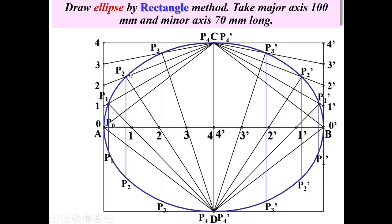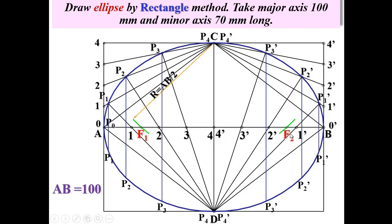Now, if you want to draw the normal and tangent at any point on the ellipse, first locate the foci F1 and F2. Set the compass to a distance equal to half the major axis — since the major axis is 100 mm, set the radius to 50 mm. Draw arcs with C as center on the major axis to get F1 and F2.